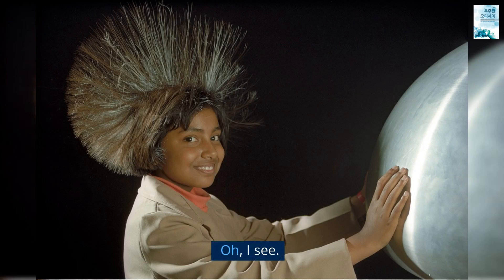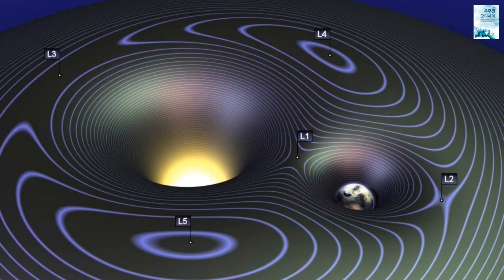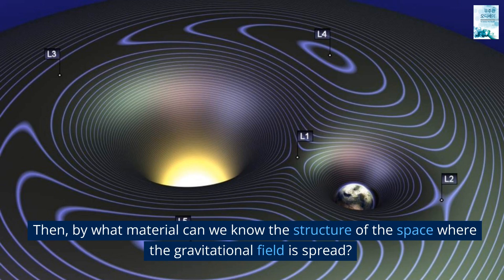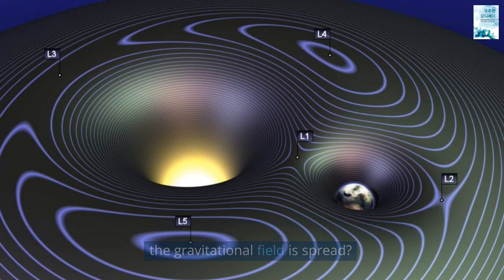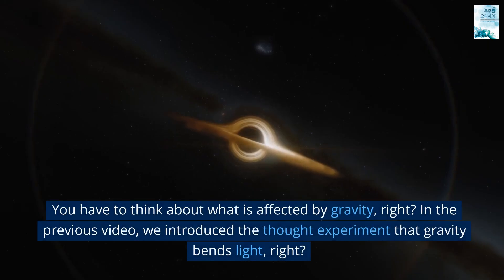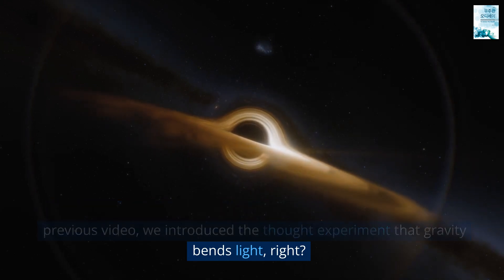Oh, I see. Then by what material can we know the structure of the space where the gravitational field is spread? You have to think about what is affected by gravity, right? In the previous video, we introduced the thought experiment that gravity bends light, right?